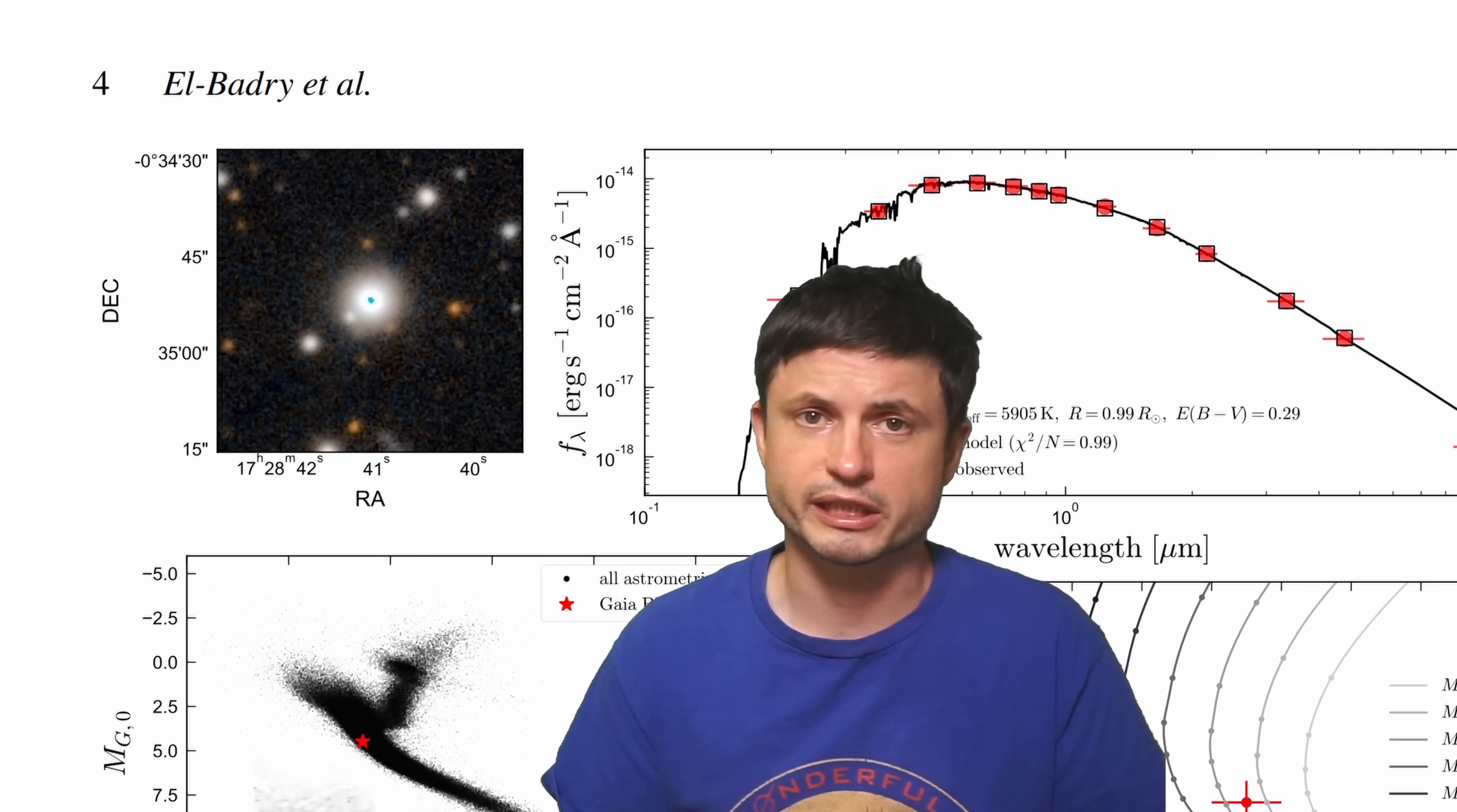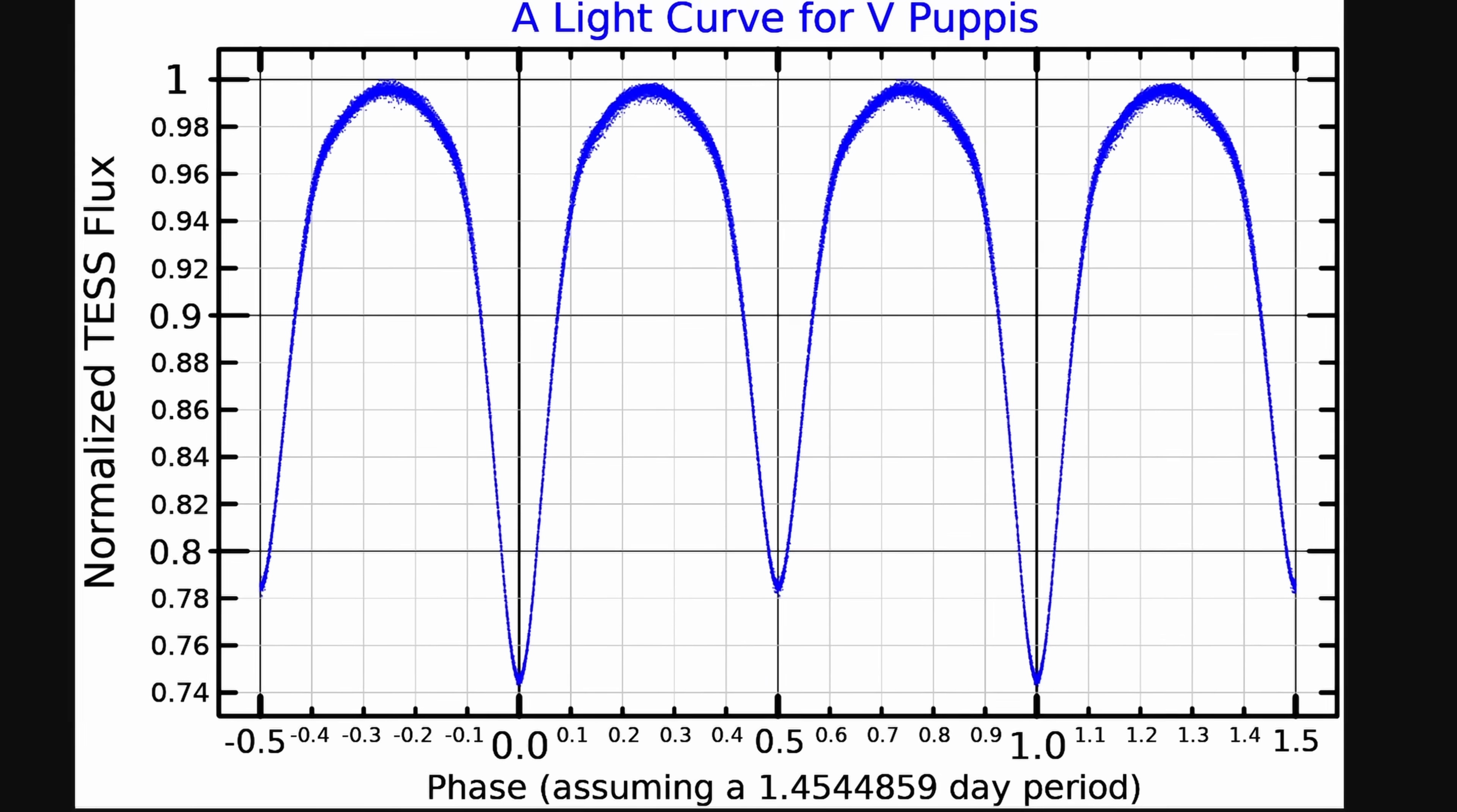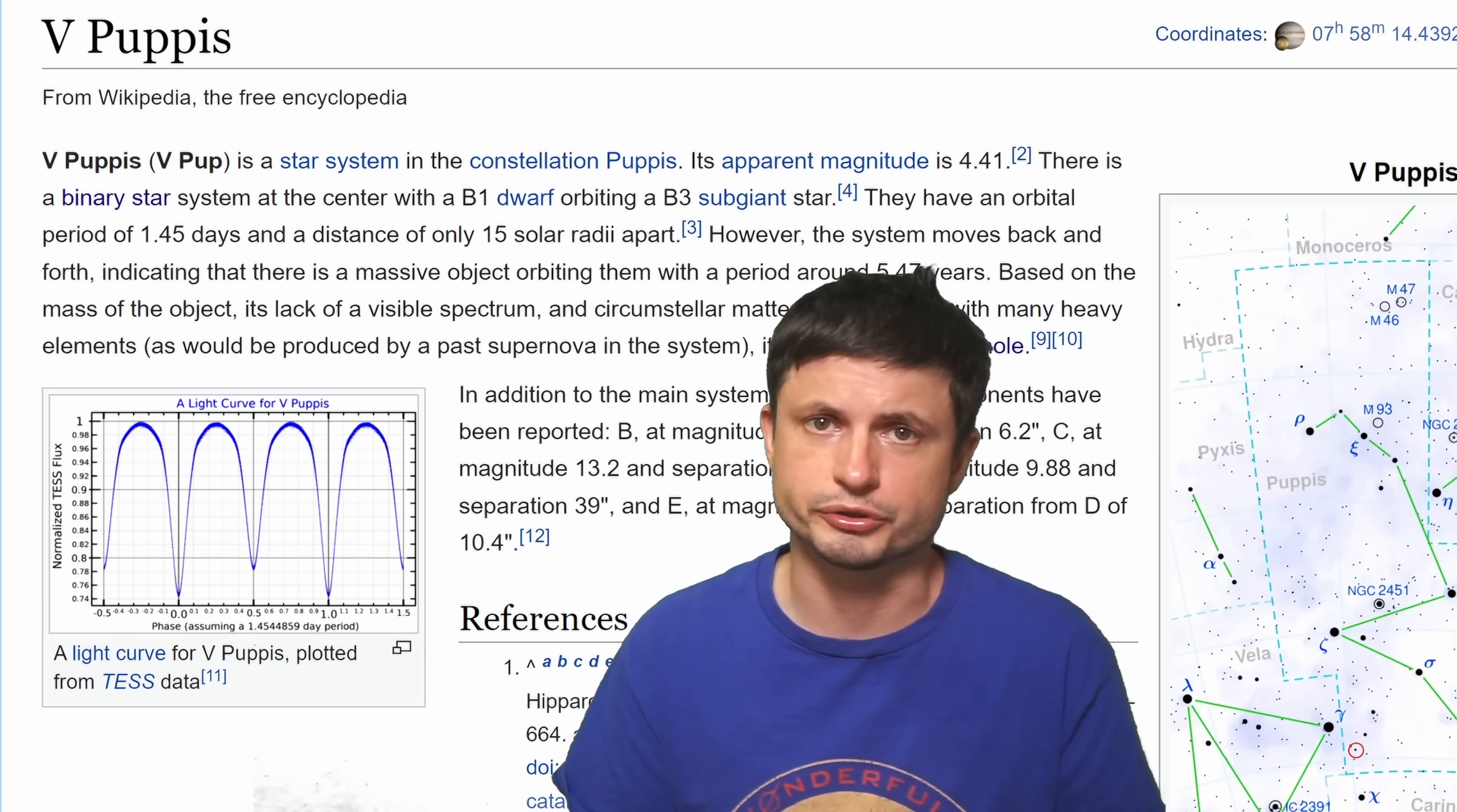But I guess the other question here is, is this the closest black hole to us? At 1500 light years away from us, it's actually beat by something else that was discovered approximately 10 years ago - the star known as HR Pupis, a binary star system that seems to contain a third object that causes these stars to have very different orbital parameters, indicating a relatively massive object at a distance of about 900 light years away from us. Or I guess about 960. Although the distance to this object has not been clearly established yet.